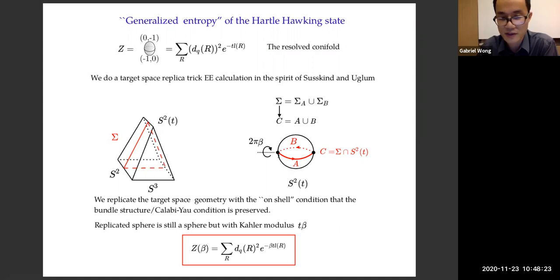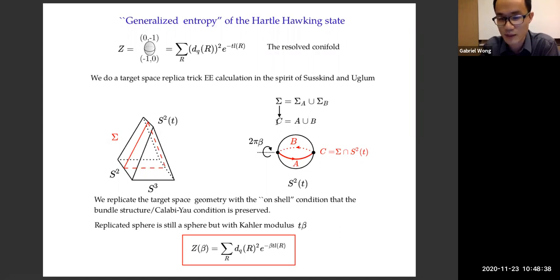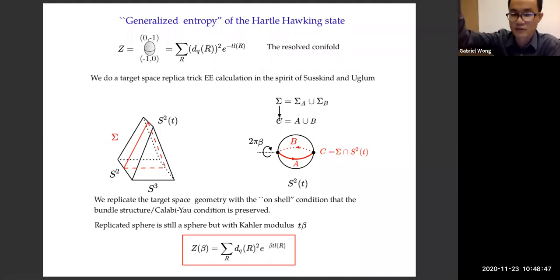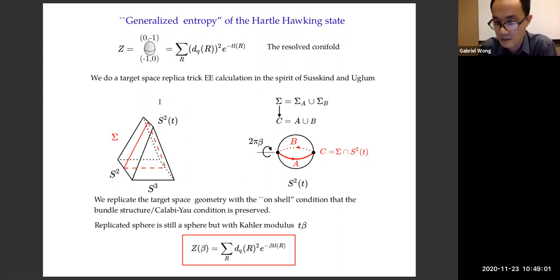I have a sphere — a bundle over a sphere — and I can look at the equator of that sphere. I ask what part of the whole bundle, when I do the projection that defines the bundle, projects sigma onto the equator C. I'm lifting C onto the whole bundle and the lift of C gives me the time slice. In terms of pictures, it's like a cartoon of a slice cutting through the sphere.